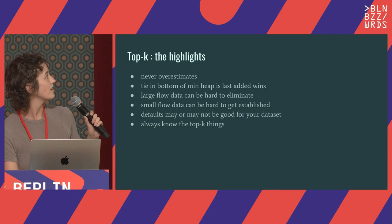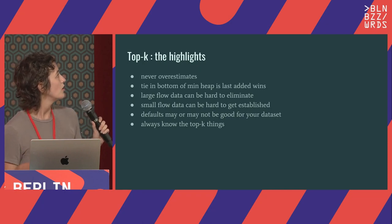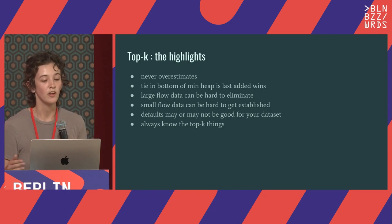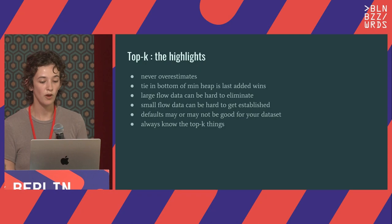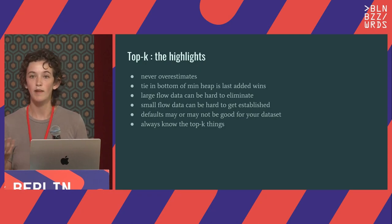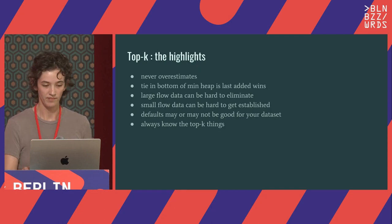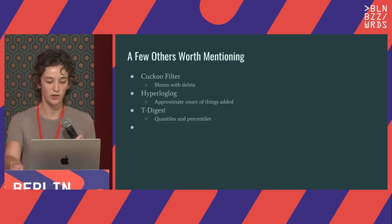The highlights of the Top-K: it never overestimates. A tie in the bottom of the min-heap is last-added wins. Large flow data can be hard to eliminate; small flow data can be hard to count accurately — same as the Count-Min Sketch. Defaults may or may not be great for your data set. And you always know the top K things.